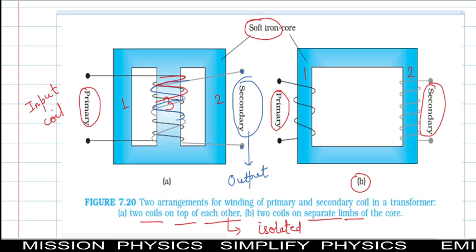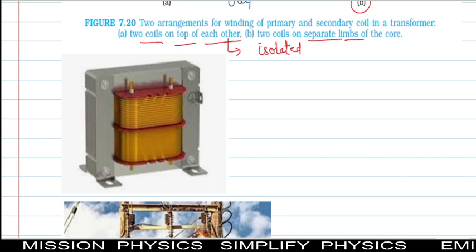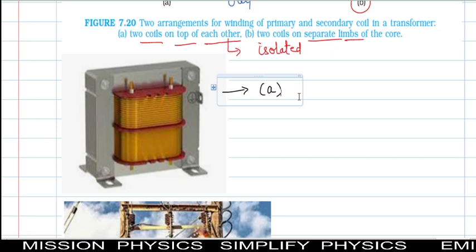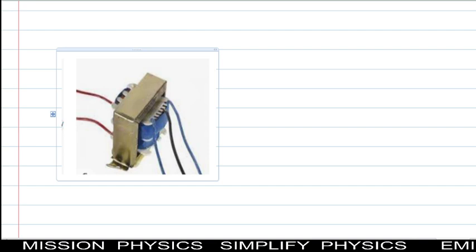A transformer is a device which can convert high voltage into low voltage - both will be in AC form - without change of form. It keeps AC as AC. In monsoon, transformers sometimes blow, so electricity is shut off from the main powerhouse when heavy rain occurs. This figure shows a working example of a transformer.